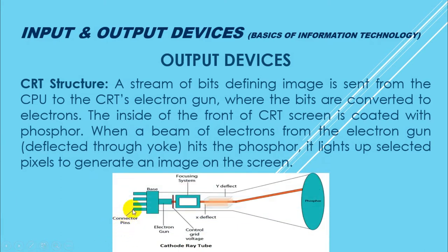Is ka pictorial representation mein dekhein: yeh back side pe iske connector pins hain jo electrical portal se attach kar di jaati hain, jahan se bits ki stream CRT ko receive hoti hai. Yahan se base attach karti hai electron gun ko connector pins ke saath. Electron gun yahan se aane wale bits — electrical signals — ko electron beam mein convert karti hai. Convert karne ke baad yahan pe control grid voltage bana hua hai jo specified voltage ko aage jaane deta hai, baaki ko yahin rok leta hai. Iske baad aage yeh focusing system hai.